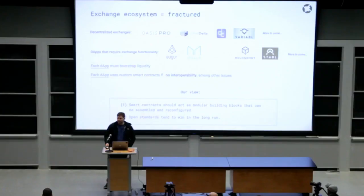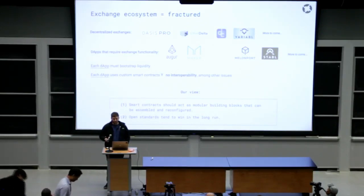The problem that we identified early on is that every single one of these different decentralized applications and decentralized exchanges were creating their own proprietary and custom smart contracts for exchange. And this creates quite a few issues. First of all, since each different dApp was creating their own custom smart contract for exchange, every single dApp would have to bootstrap liquidity from scratch.